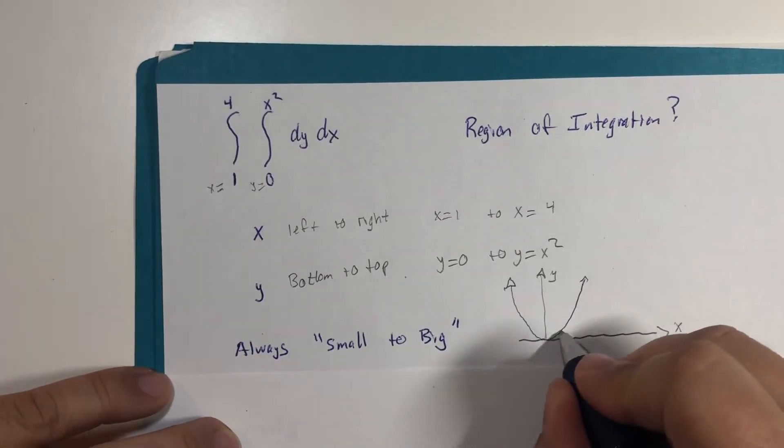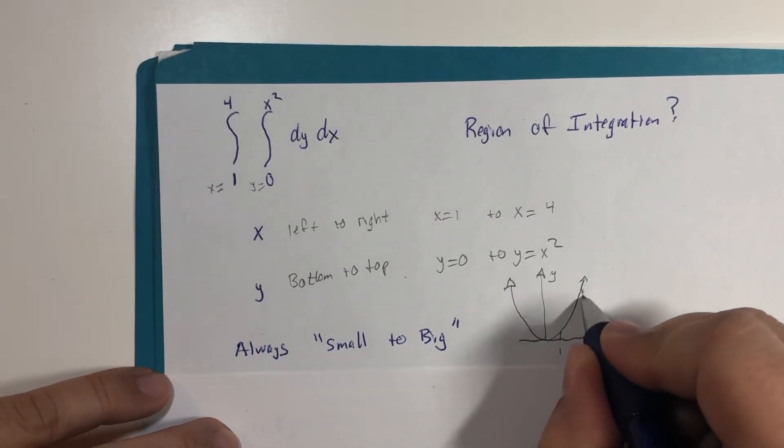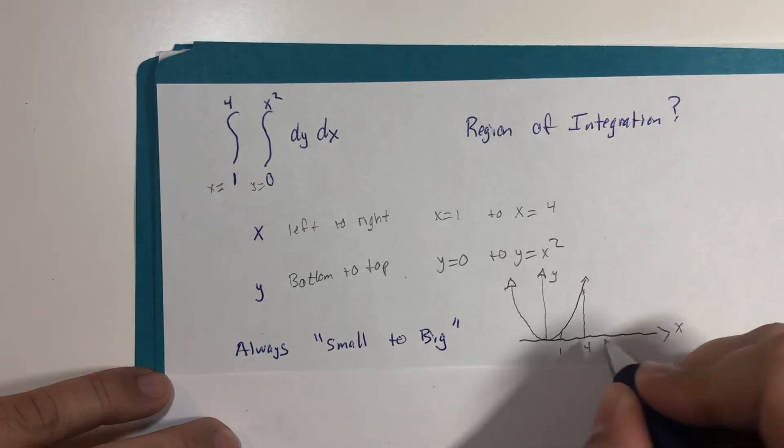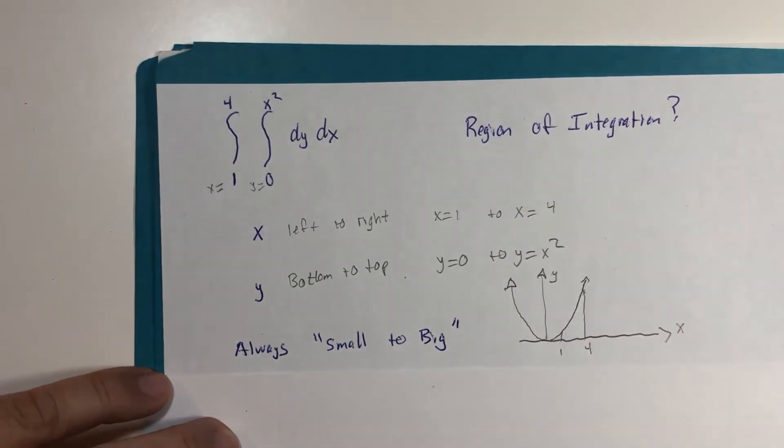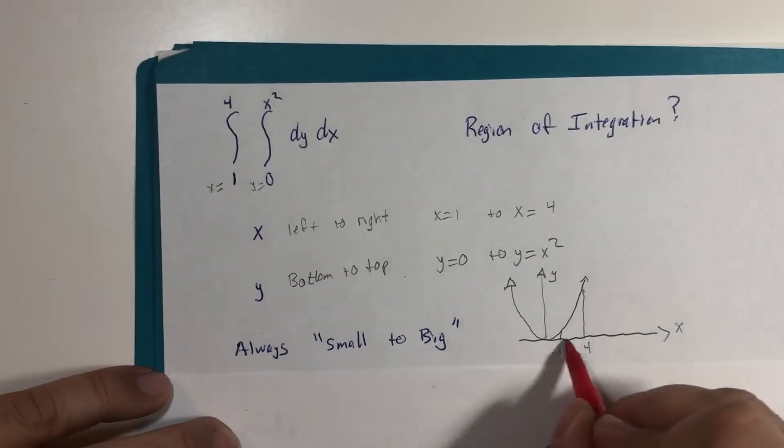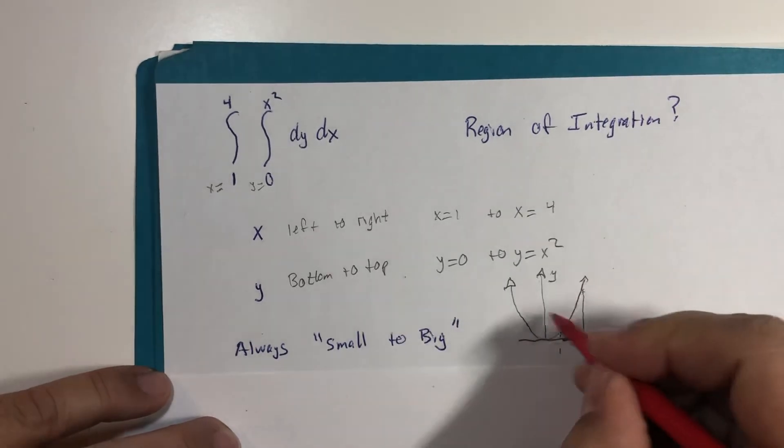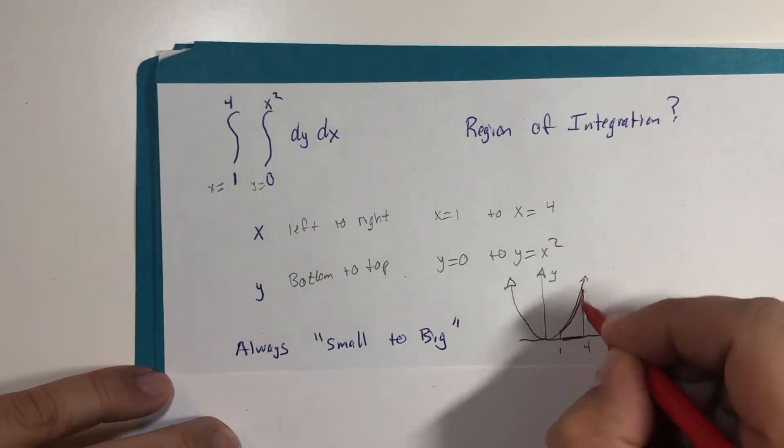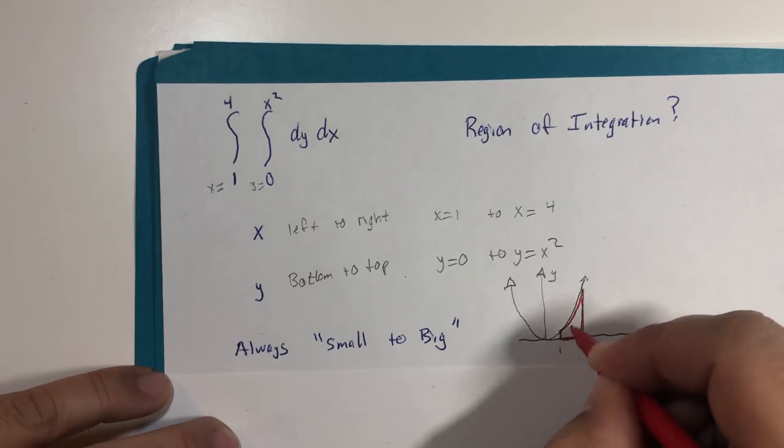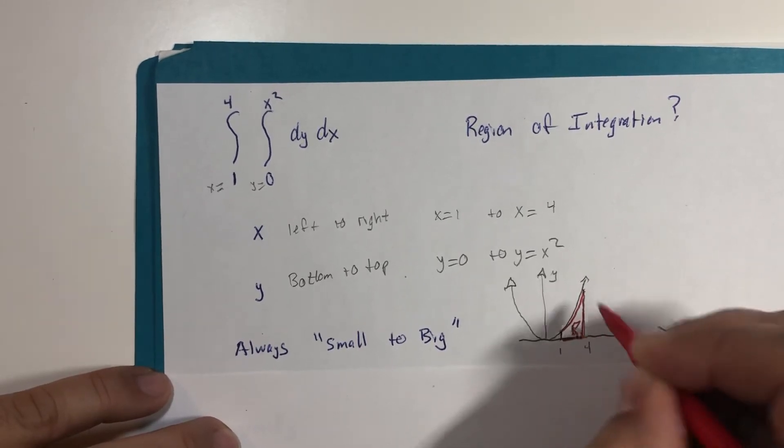And we want to measure this from x equals one to x equals four, and the y value goes from y equals zero, which is the x axis, to y equals x squared. So this, my students, is our region of integration.